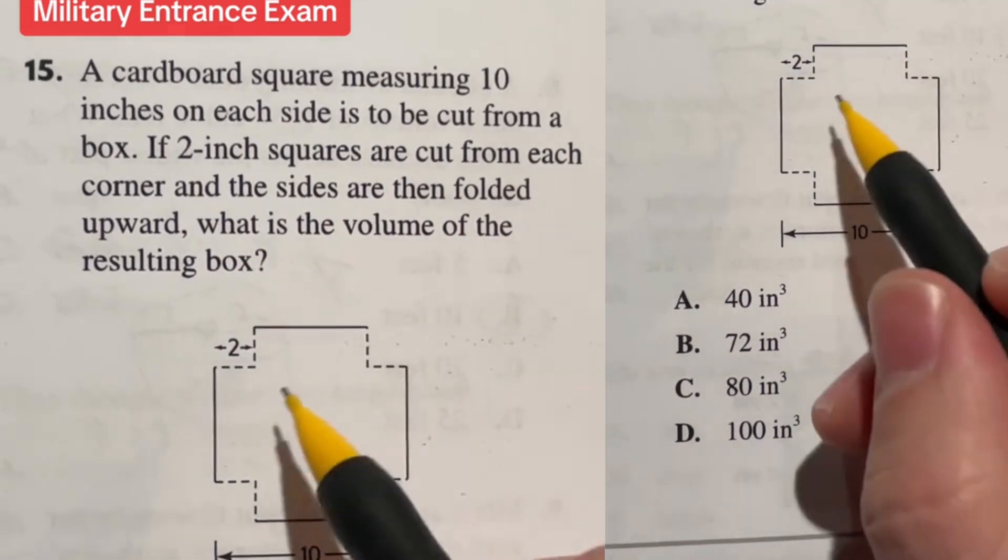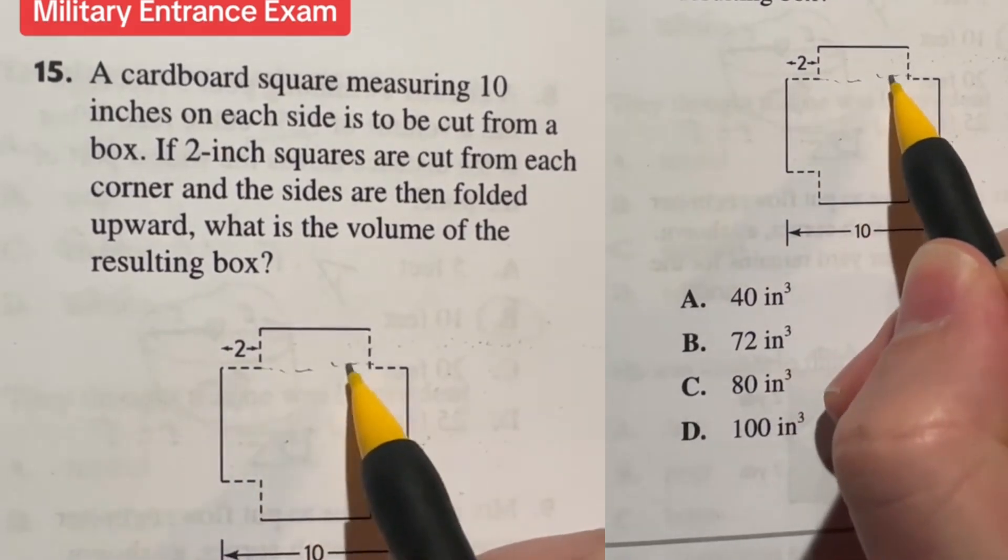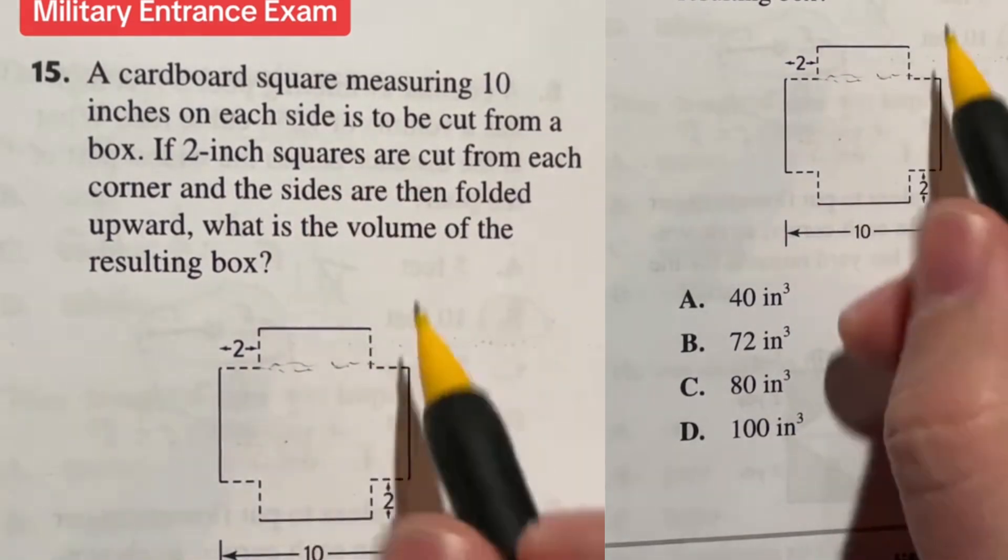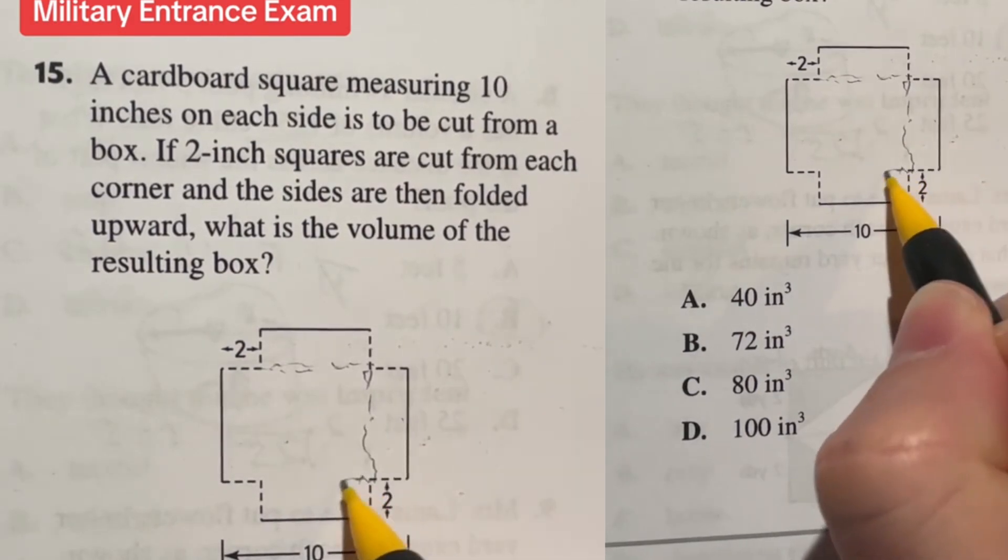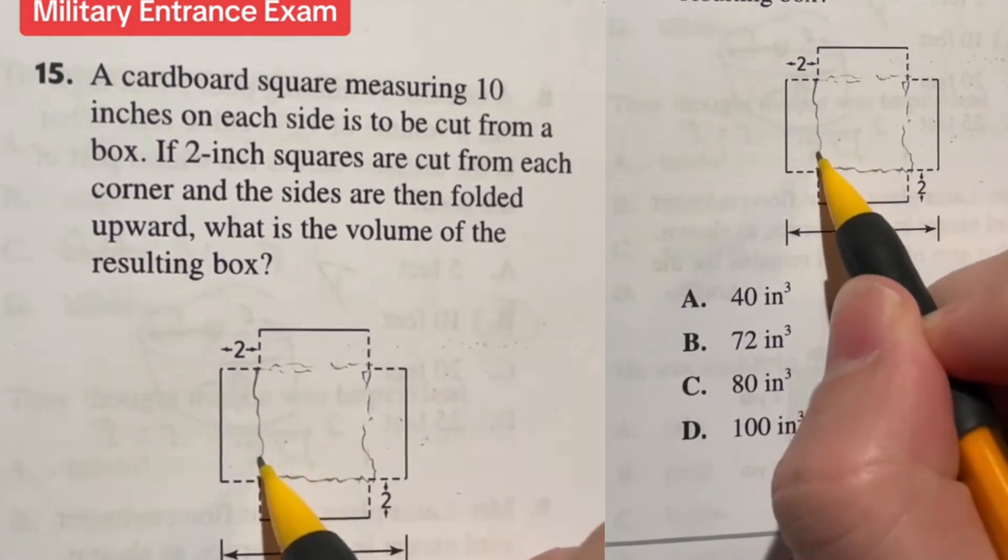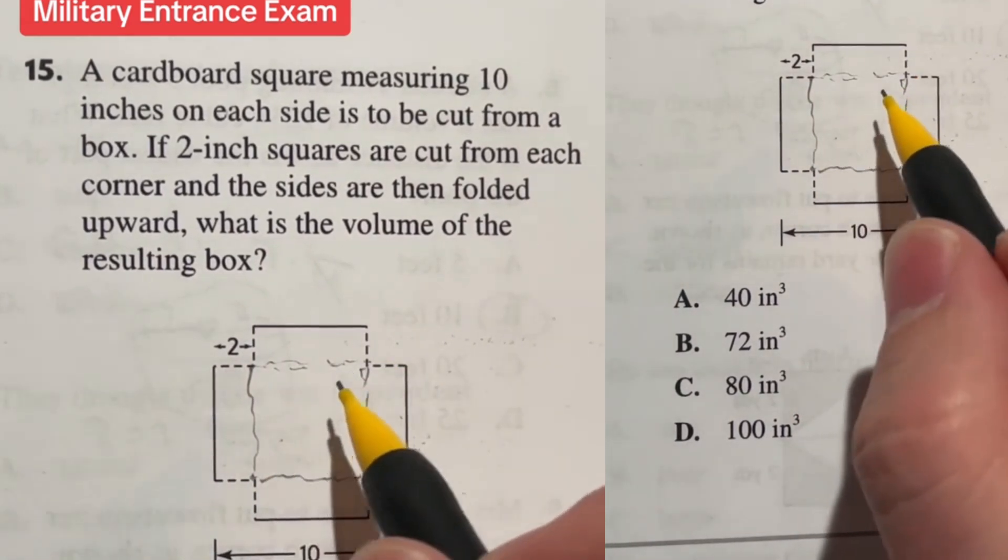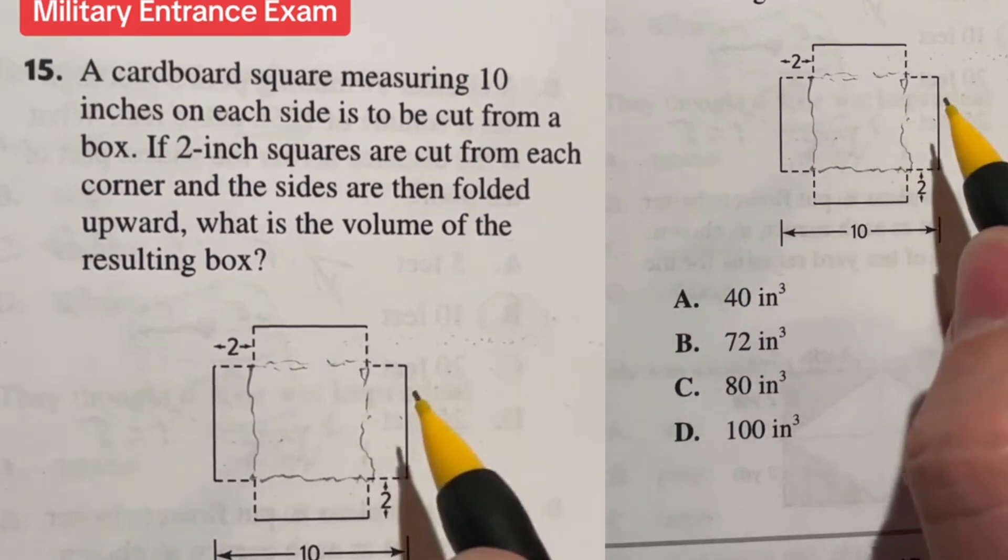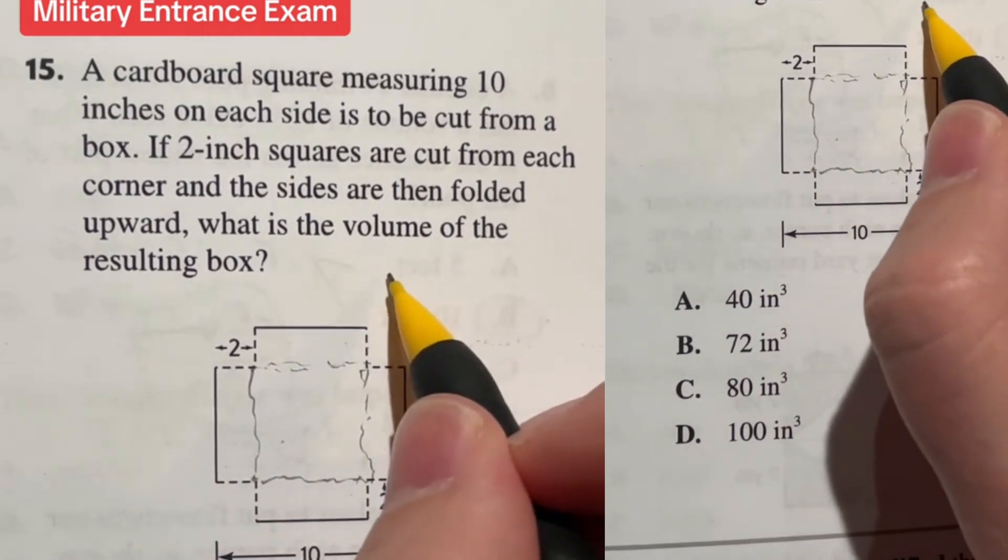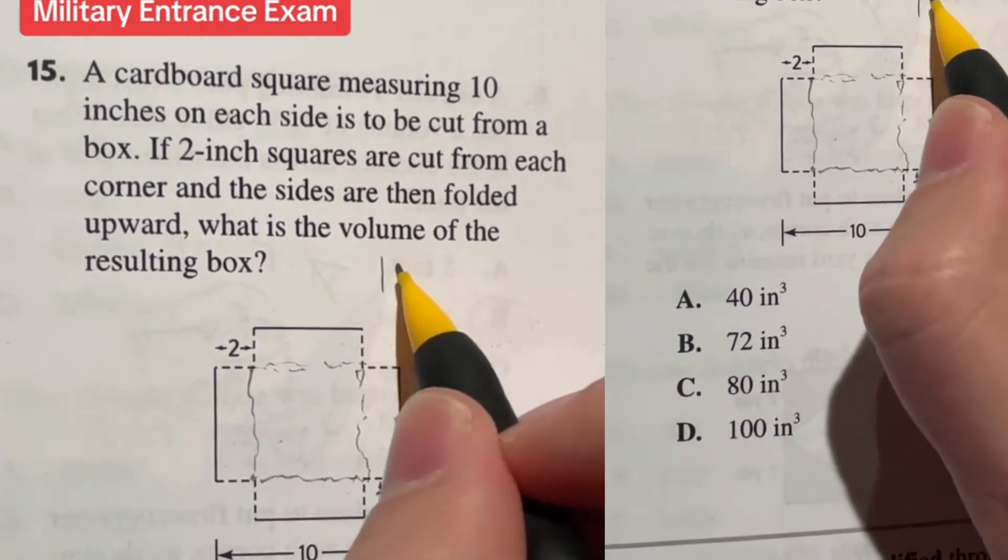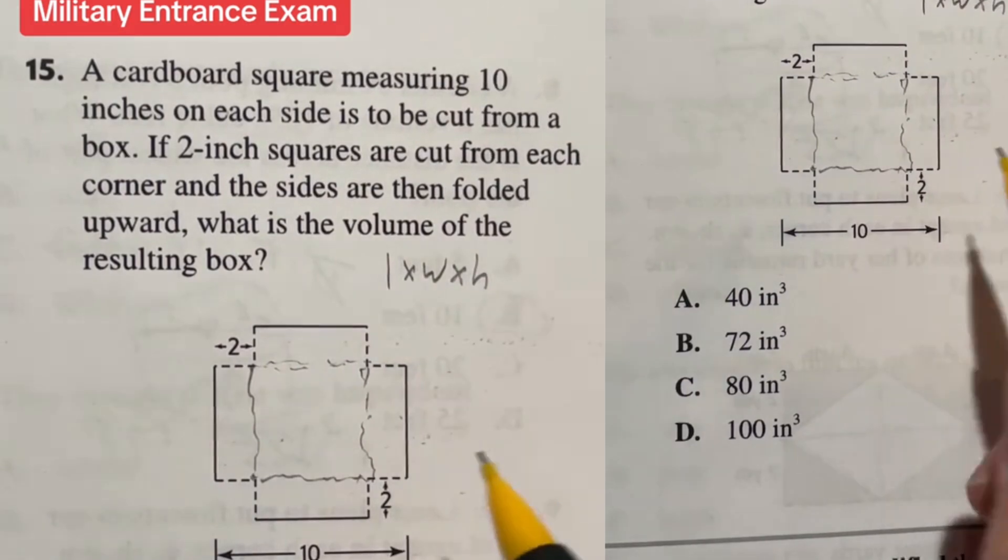When we're looking at this guy right here essentially what's going to happen is they're going to fold along this dotted line to bring this side up and then same here they're going to fold and bring this side up and this side and this side. So essentially it's going to be like the bottom side of a clothing box you would get from Christmas or something. We're going to find the volume of this box. Volumes of rectangular prisms like that are length times width times height. So those are the three things we need.